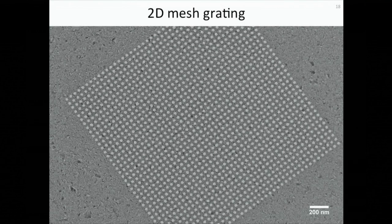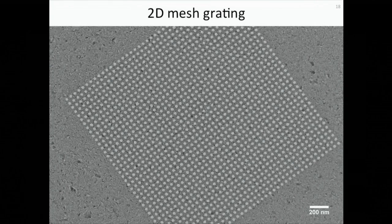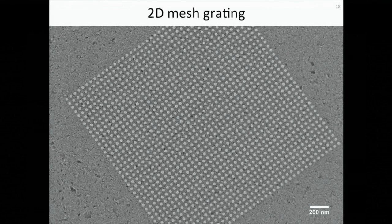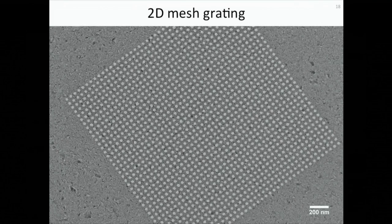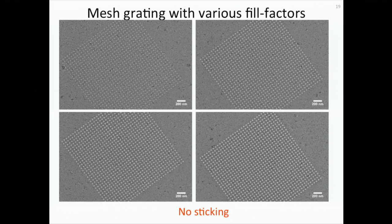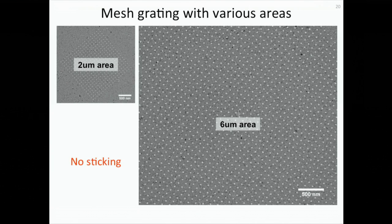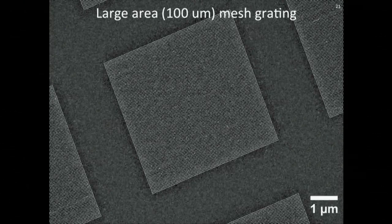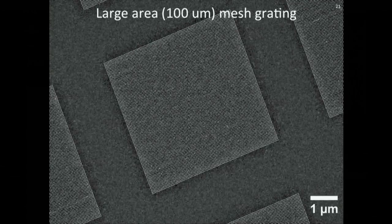In order to solve the sticking problem, we move from one-dimensional line grating to a two-dimensional mesh grating as shown in this figure. We make a square lattice, two-dimensional mesh grating with various pitches. We test this design by changing the fill factors. We fabricate mesh gratings with various line widths and we do not observe any sticking problems. Also, we pattern the mesh grating with large area and again, we do not observe any sticking problem. So we are able to solve the sticking problem by moving to this two-dimensional mesh grating. Finally, we're able to reach a larger mesh grating with 100 micron area as shown in this figure.